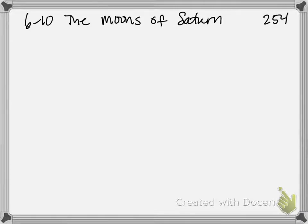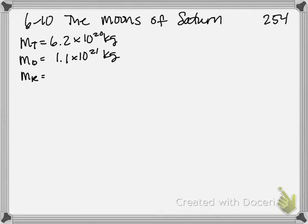So the masses that we have are the mass of Tethys, 6.2 times 10 to the 20th kilograms. For Dione, 1.1 times 10 to the 21 kilograms. And for Rhea, 2.3 times 10 to the 21st kilograms.